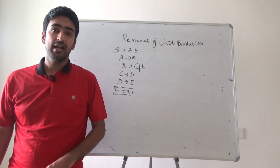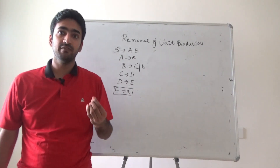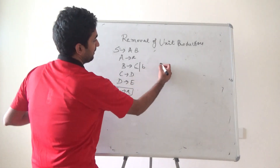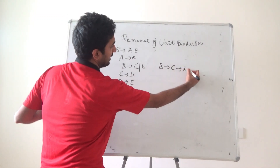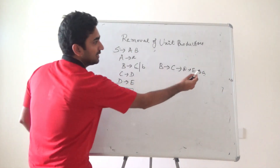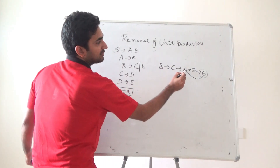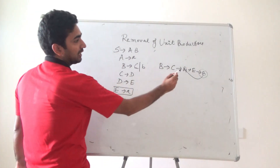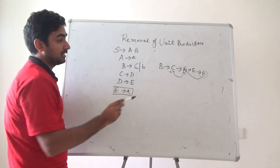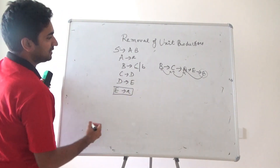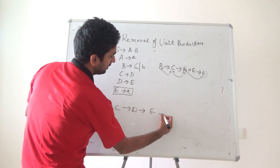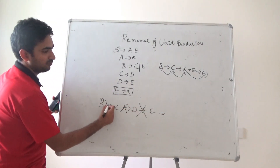We will require those rules which are generating only terminals. B is generating C, C is generating D, D is generating E, and E is generating small a. So the value of E is small a — you can assign it to D. Again, D's value of small a is assigned to C, and C's value of small a is assigned to B. So I am removing the rules for B, C, and D.